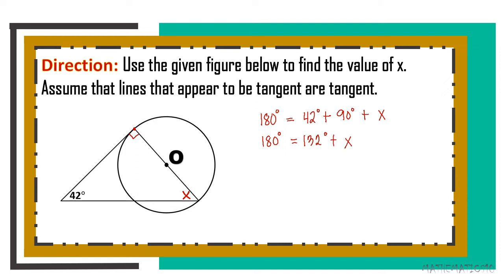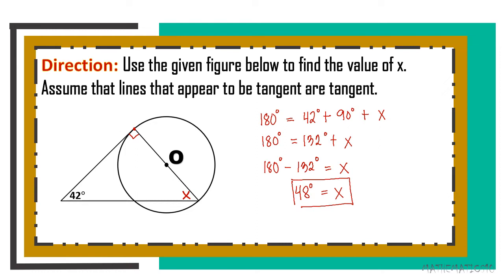Applying transposition: 180 minus 132 degrees equals X. So 180 minus 132 gives us 48 degrees. Therefore, 48 degrees is the angle measure of angle X.